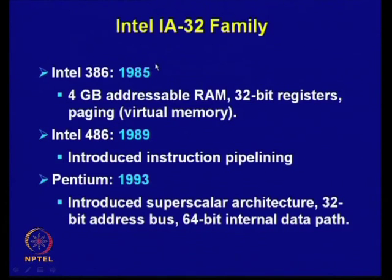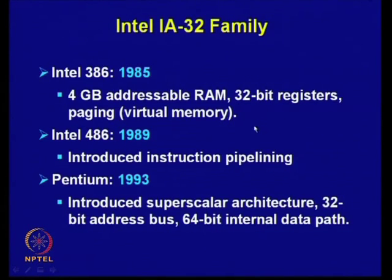Coming to the 32-bit family: back in 1985, Intel 386 was proposed with 4 GB addressable RAM, all registers were 32-bit, and it allows virtual memory using the paging concept. Then in 1989, the 80486 was introduced with instruction pipelining. Up to 80386, pipelining was done in a very limited way — there was no separate pipeline for instruction and data, it was a single pipeline.